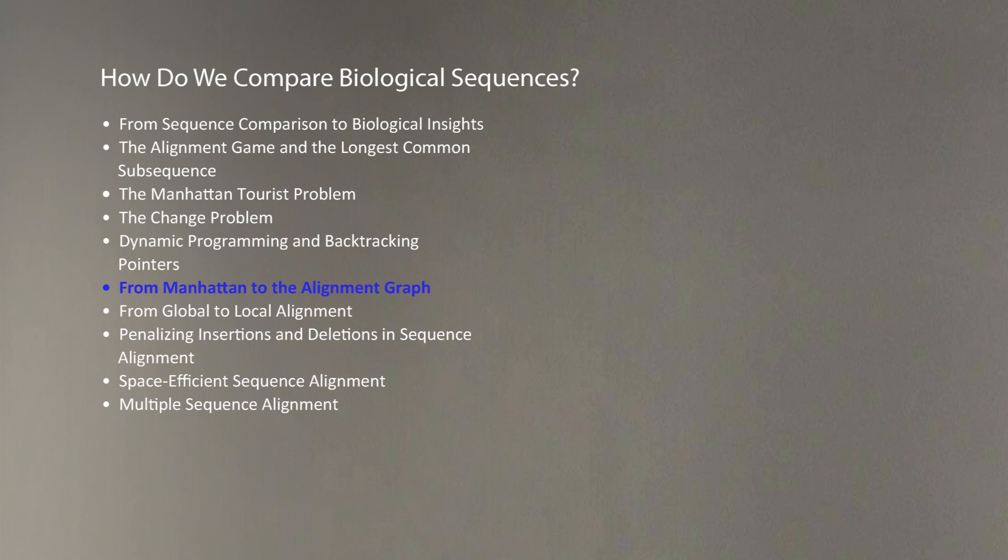And we now move from describing how dynamic programming works in a simple Manhattan grid, to describing how it works in arbitrary alignment graphs.